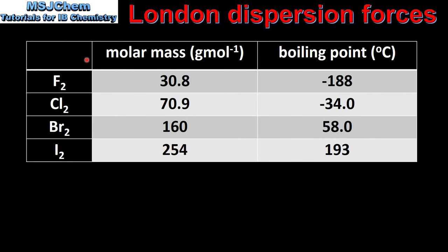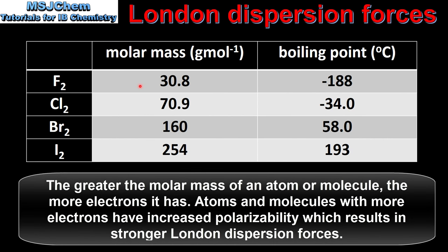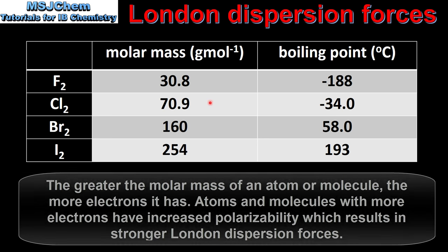Next we look at the effect of increasing molar mass on the boiling point of the diatomic molecules in Group 17. As we go from fluorine to chlorine to bromine to iodine, the molar mass is increasing. The boiling point is also increasing. So as the molar mass of a molecule increases, so does its boiling point. This is because as the molar mass increases, the strength of the London dispersion forces between the molecules also increases, resulting in a higher boiling point.